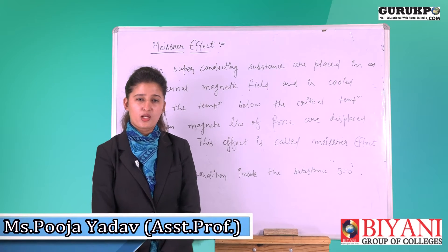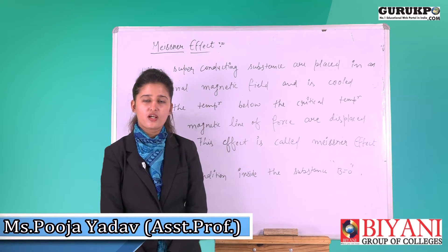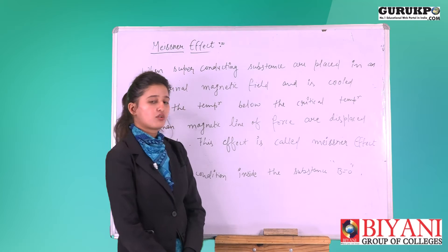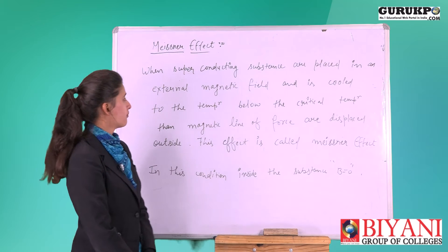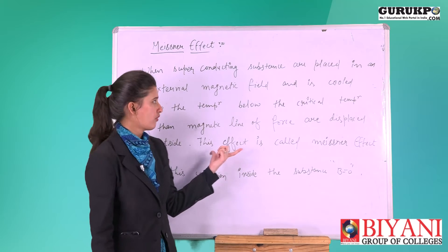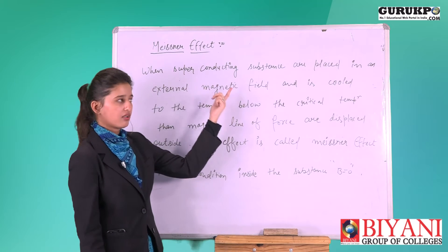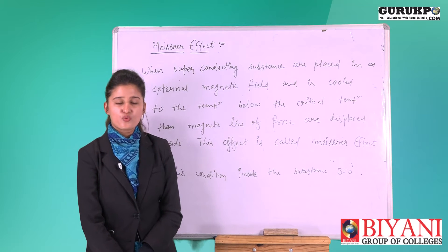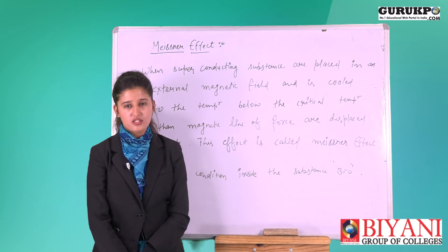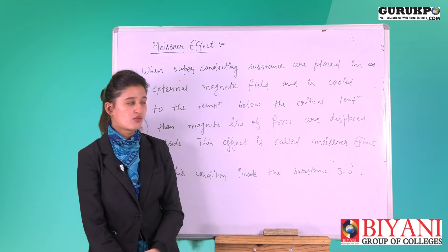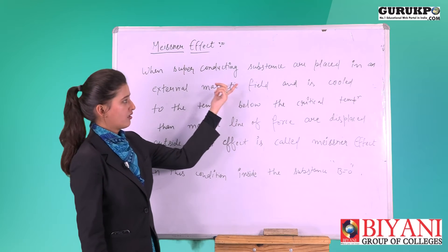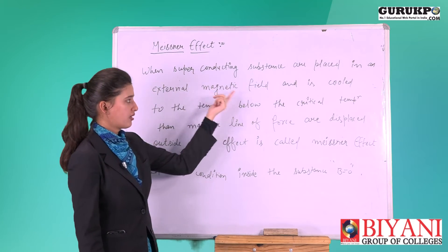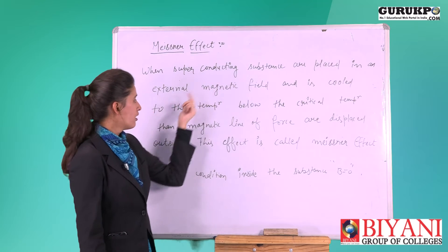Hello everyone, I am Puja Yadav, assistant professor in Bianning Group of Colleges. Today our topic for the video lecture is the Meissner effect. Superconducting substances are those substances which have resistivity equal to zero. When a superconducting substance is placed in an external magnetic field and is cooled to below the critical temperature...